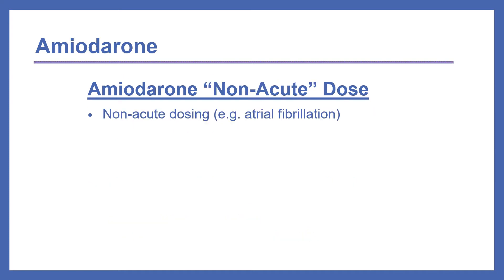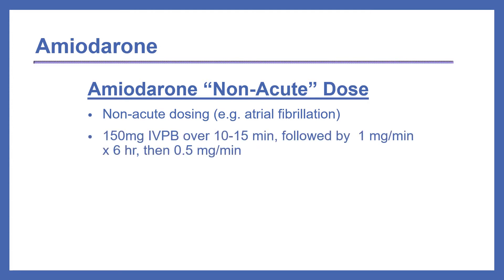It's important to distinguish the cold blue dose of amiodarone from the non-acute dose. The majority of amiodarone drips are started as non-acute dosing — for example, when treating atrial fibrillation. This dose, taken straight from the package insert, is 150 mg IV piggyback over 10 to 15 minutes, followed by 1 mg per minute drip for 6 hours, and then 0.5 mg per minute thereafter.